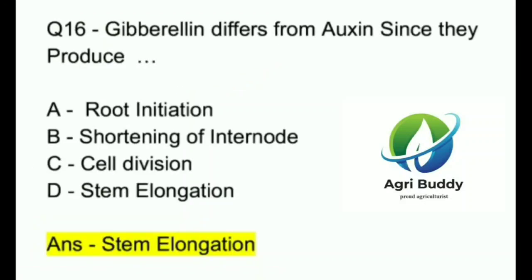Question 16. Gibberellin differs from auxin since they produce? A. Root initiation. B. Shortening of internode. C. Cell division. D. Stem elongation. And the answer is Stem elongation.